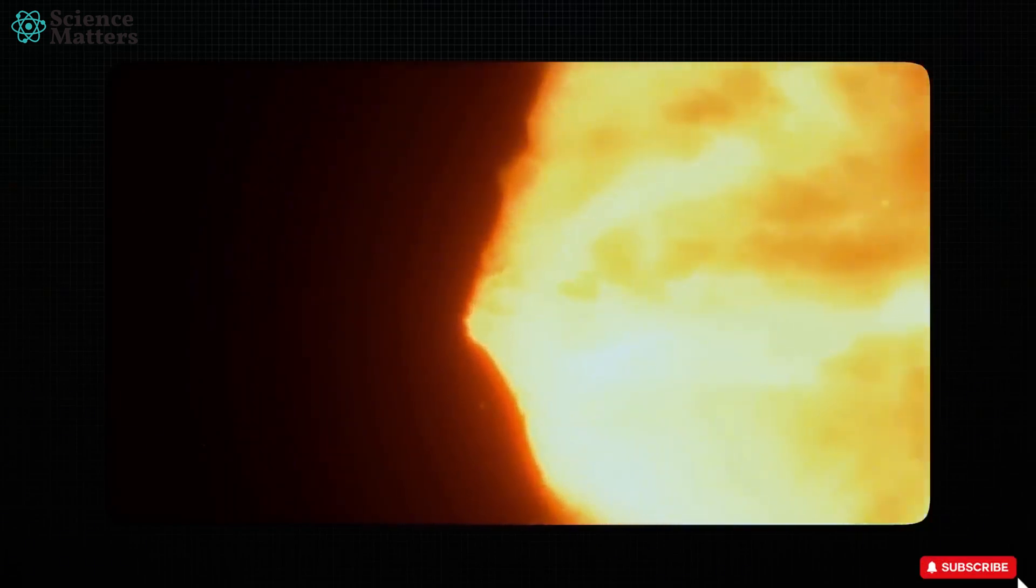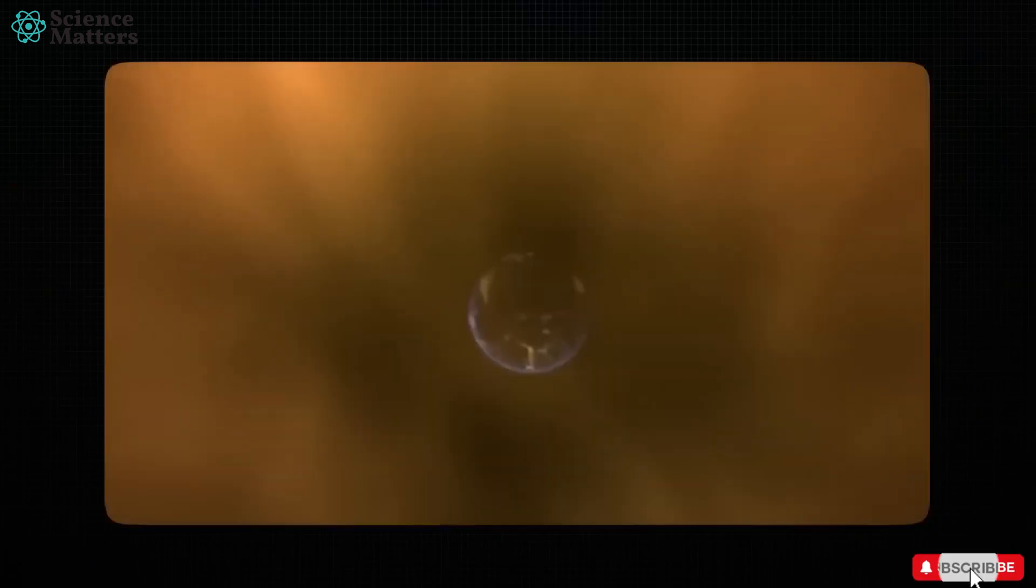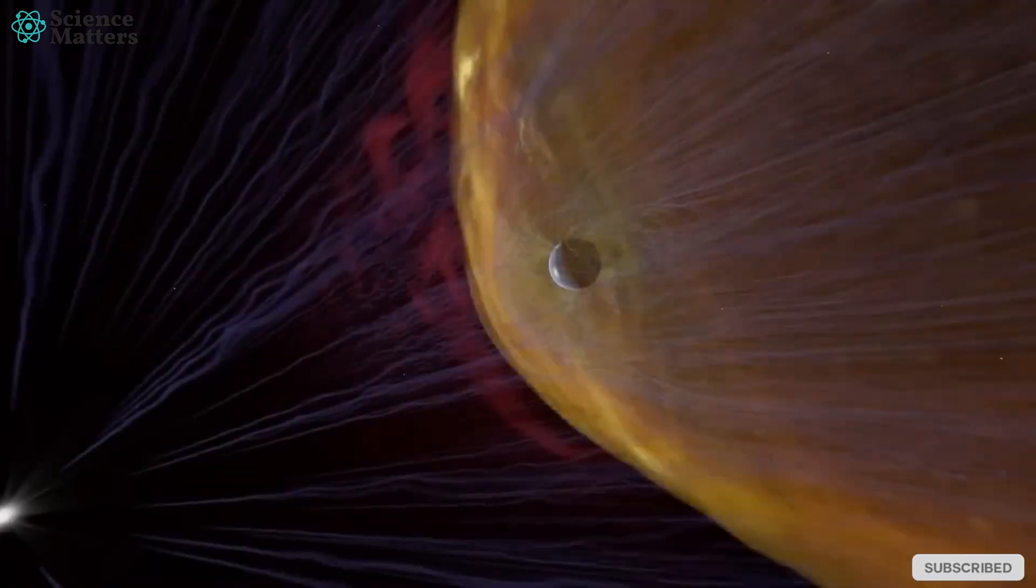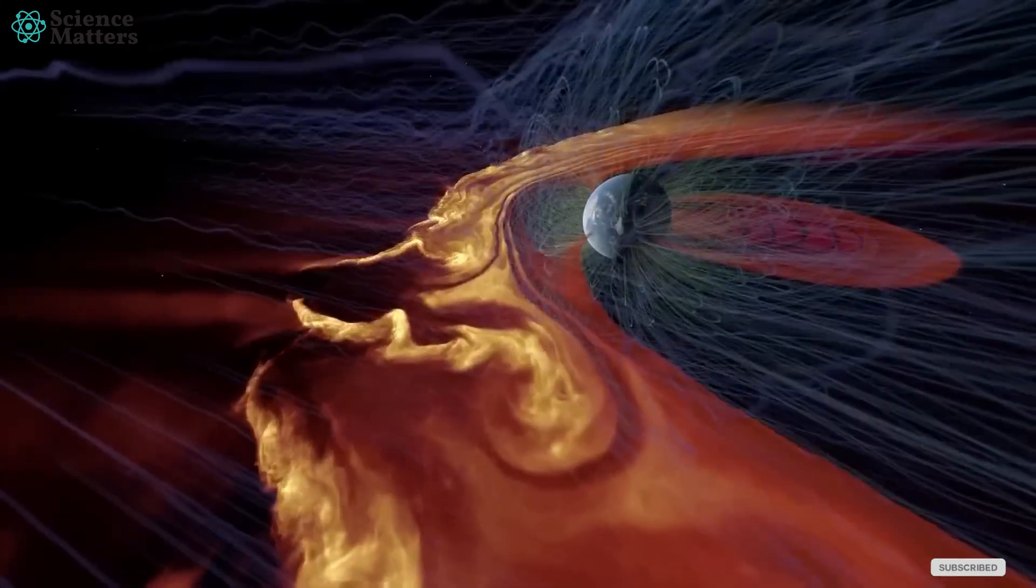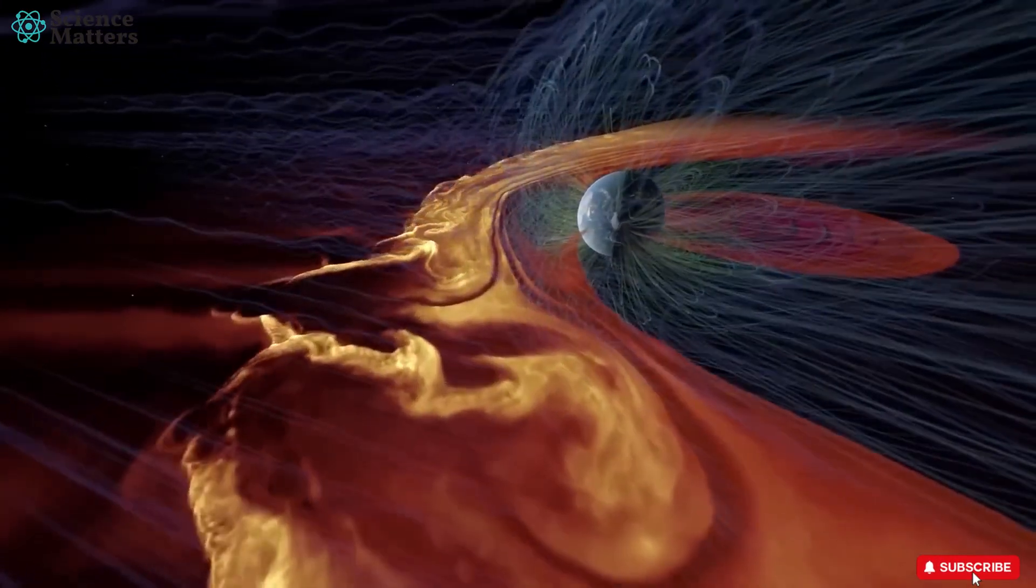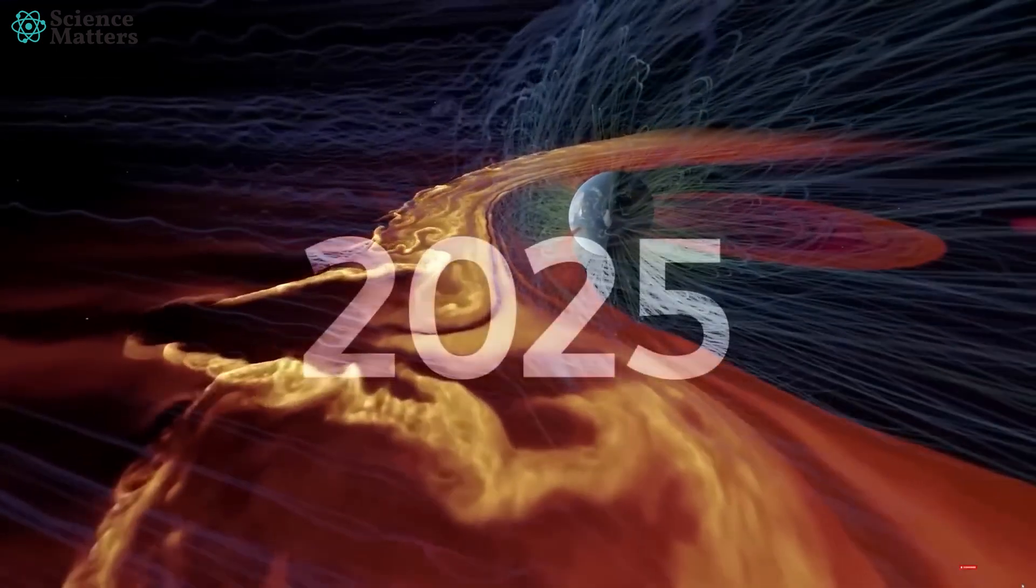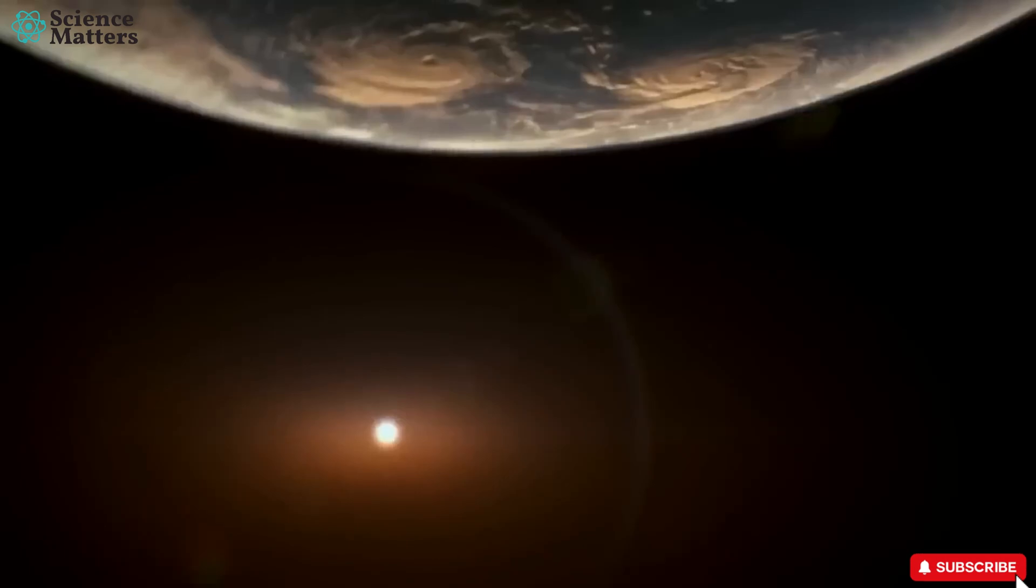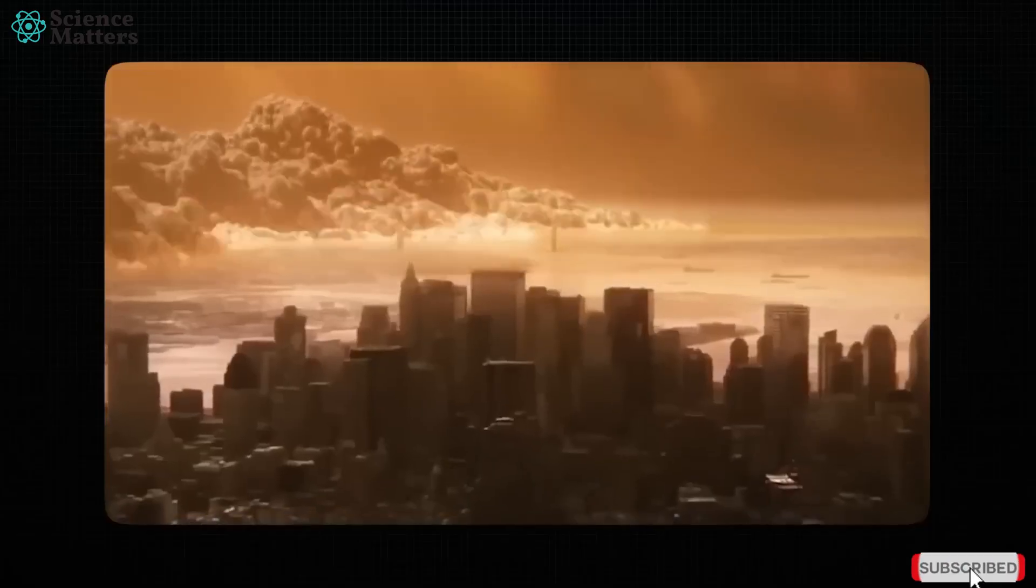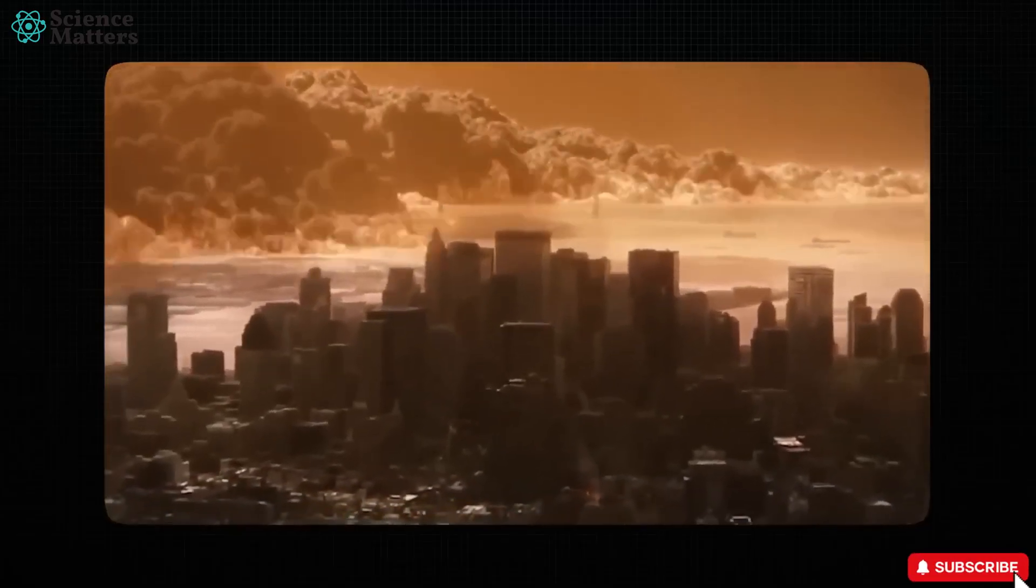Since Earth is the only habitable planet in the solar system, it experiences the most impact. The last time these flares hit Earth was in 2014, and now, 11 years later, they are set to hit again in 2025. If this solar flare collides with Earth, it could lead to serious damage, possibly even mass extinction.